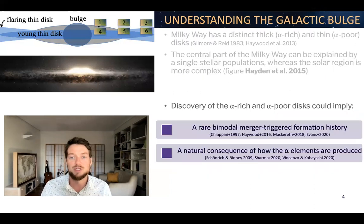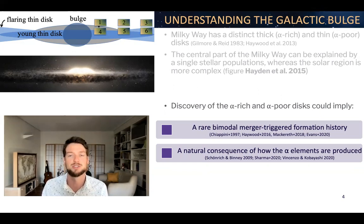In fact, the discovery of the alpha-rich and alpha-poor disk could imply that this rare bimodality was formed in a merger that triggered a new set of star formation. Here you've got an initial burst of star formation that gets quenched, but then a rare merger occurs that triggers another set of star formation. And in this case, it's actually been shown by simulations that this is a rather rare event, probably less than 5% of galaxies like our Milky Way might have experienced such an event.